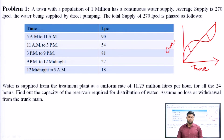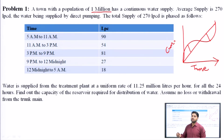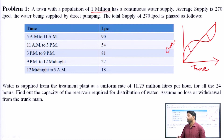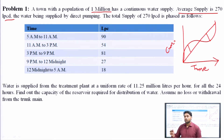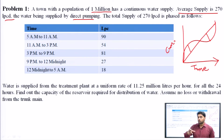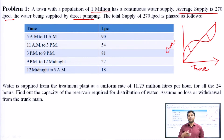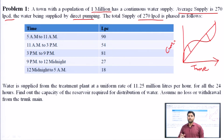Starting with the first numerical: a town with a population of 1 million has a continuous water supply. The average supply is 270 LPCD — that is, 270 liters per capita per day. The water is supplied by direct pumping, meaning the pump operates to deliver the total supply of 270 LPCD in a phased manner.